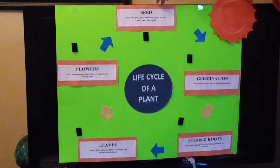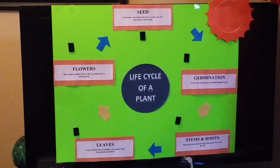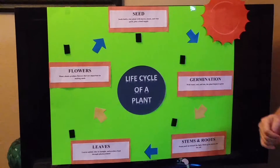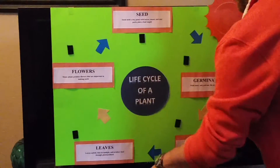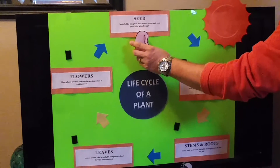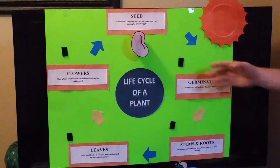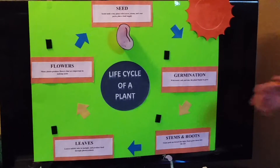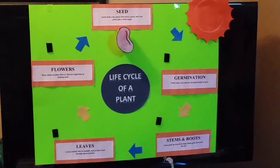Here at the beginning, the seed holds a tiny plant with leaves, stem, and root parts, plus a food supply, and students can easily attach that there. That then goes to the next stage of germination — with water, soil, and sun the plant begins to grow.